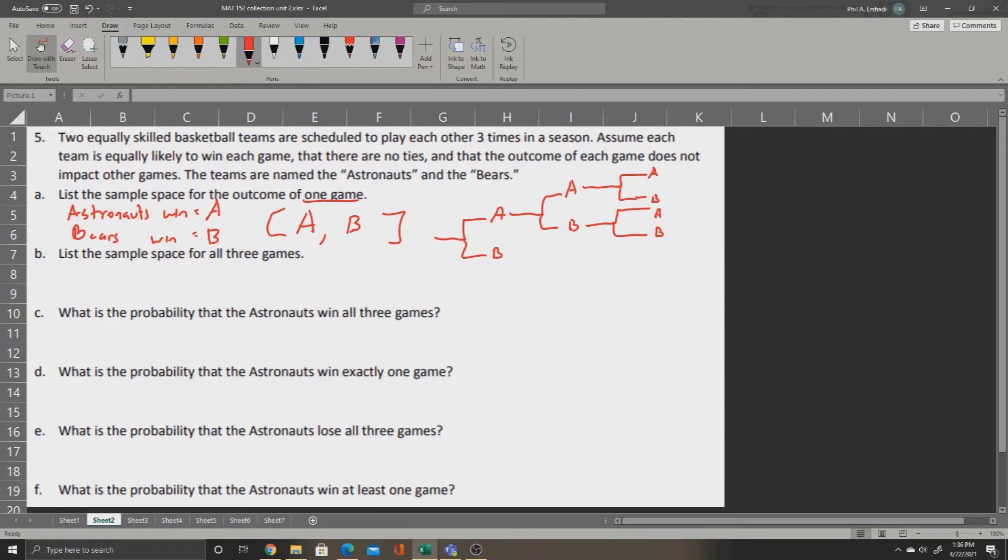Now we've just completed the picture for A, we do the same thing for B. If the Bears win, we split into two pieces, and then we split again into two more pieces to show the third game.